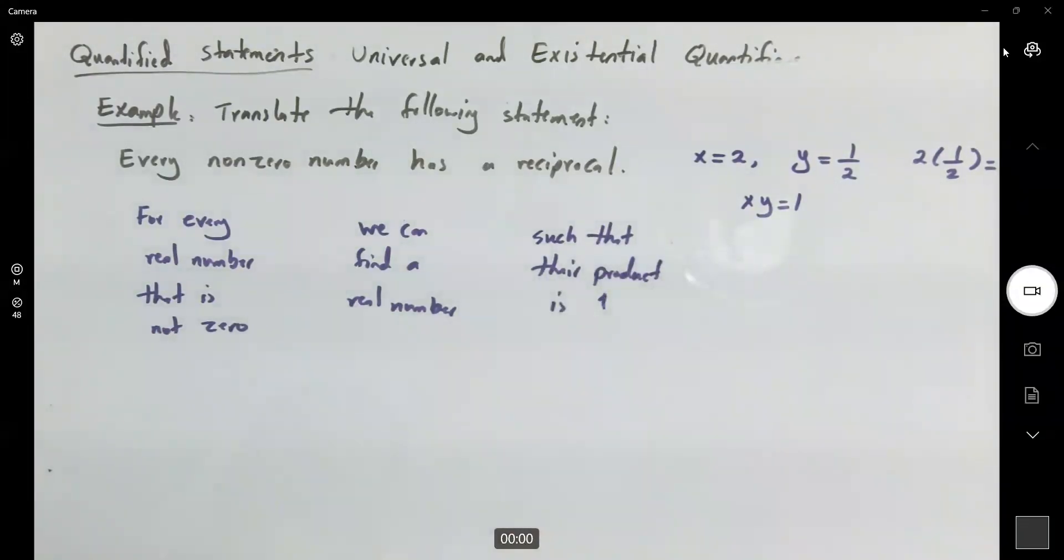So, one by one, piece by piece, for every real number that is non-zero, for every non-zero real number, we can find, let's just call it a real number like x. We can find a real number, there is a real number.